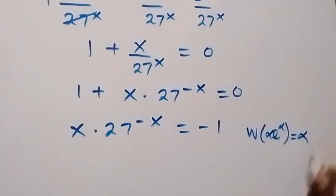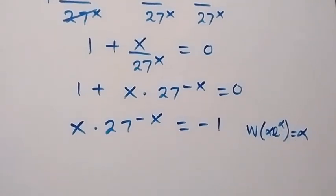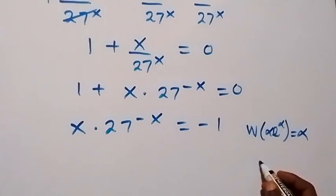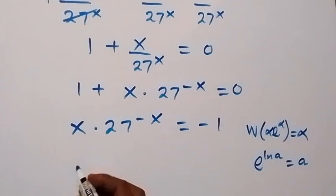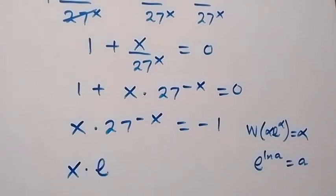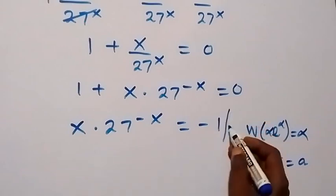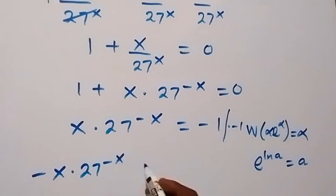When we have W of alpha times exponent alpha, this still gives us alpha — that is, the power of the exponent and the coefficient must be the same. We can write 27 raised to the power minus x as exponent of ln 27 raised to the power minus x. First, let's remove the minus by multiplying through by minus 1, so this becomes minus x times 27 raised to the power minus x equals to 1.